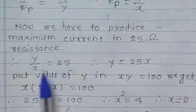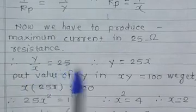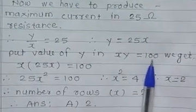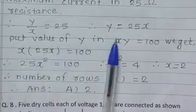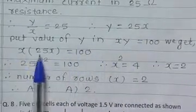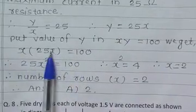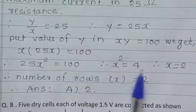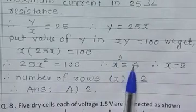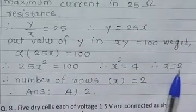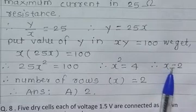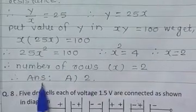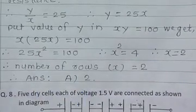To produce maximum current in 25 ohm resistance, y upon x equals 25. From x times y equals 100 and y equals 25x, we get 25 x square equals 100. So x square equals 4 and x equals 2. The number of rows is 2, option A.